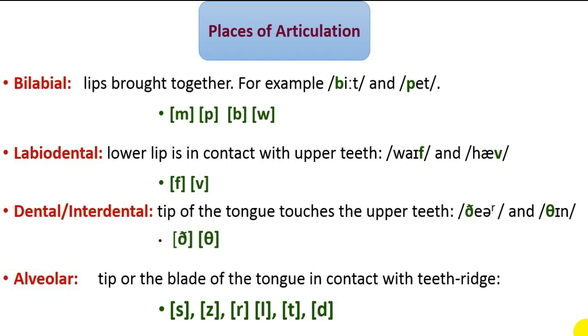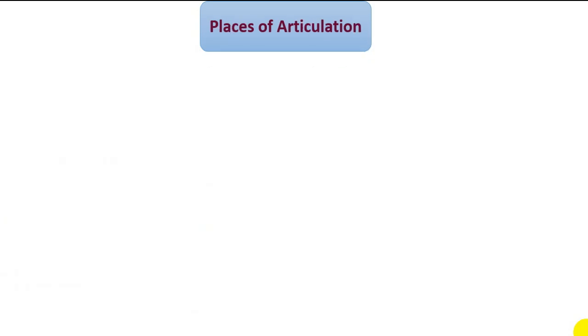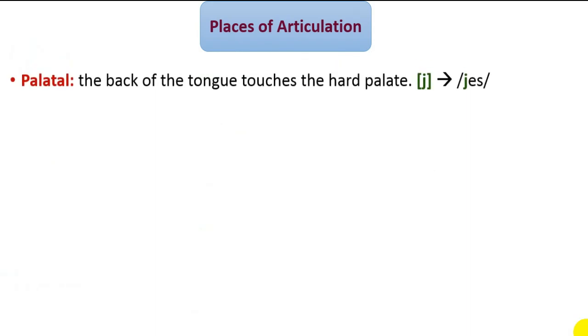Another feature of consonant sounds in terms of place of articulation is palatal. In the production of a palatal sound, the front part of the tongue touches the hard palate. In English, for instance, the only palatal is the semi-vowel Y, as in yes.